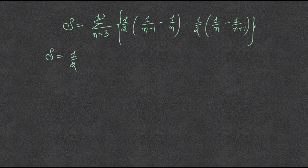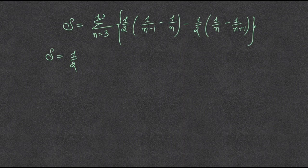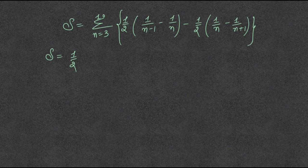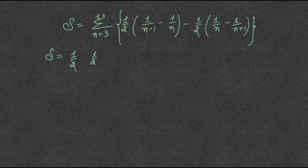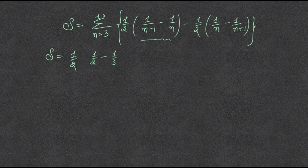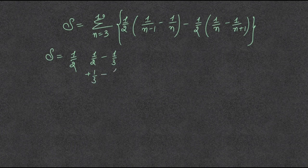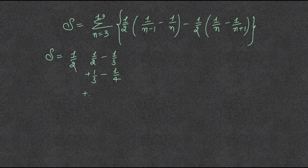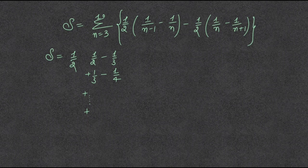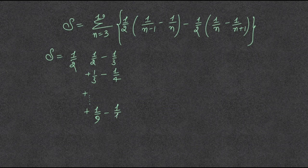So S is equal to 1 by 2. Putting the values of n starting from 3, we get 1 by 2 minus 1 by 3 for the first bracket, plus 1 by 3 minus 1 by 4 for n equal to 4, and it goes on. For 10 it becomes 1 upon 9 minus 1 upon 10.